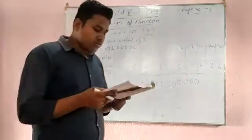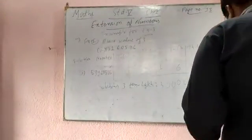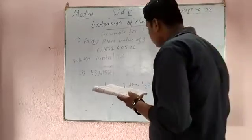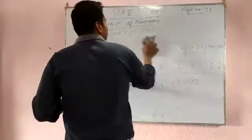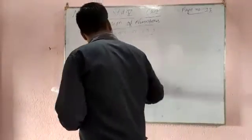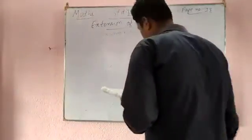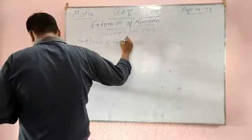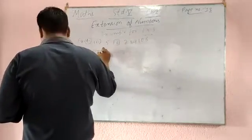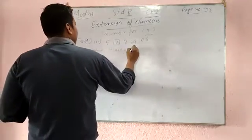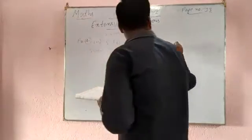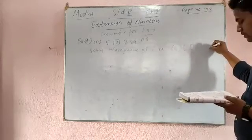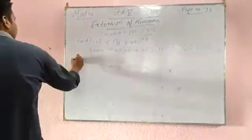Now I will go to example number 4: find the place value of given digits in the boxes. The number is 56239132 8. You have to find the place value of 6. Place value of 6: write 6, then count how many numbers come after it — 1, 2, 3, 4, 5, 6. So put 6 zeros after 6. That is your required answer.